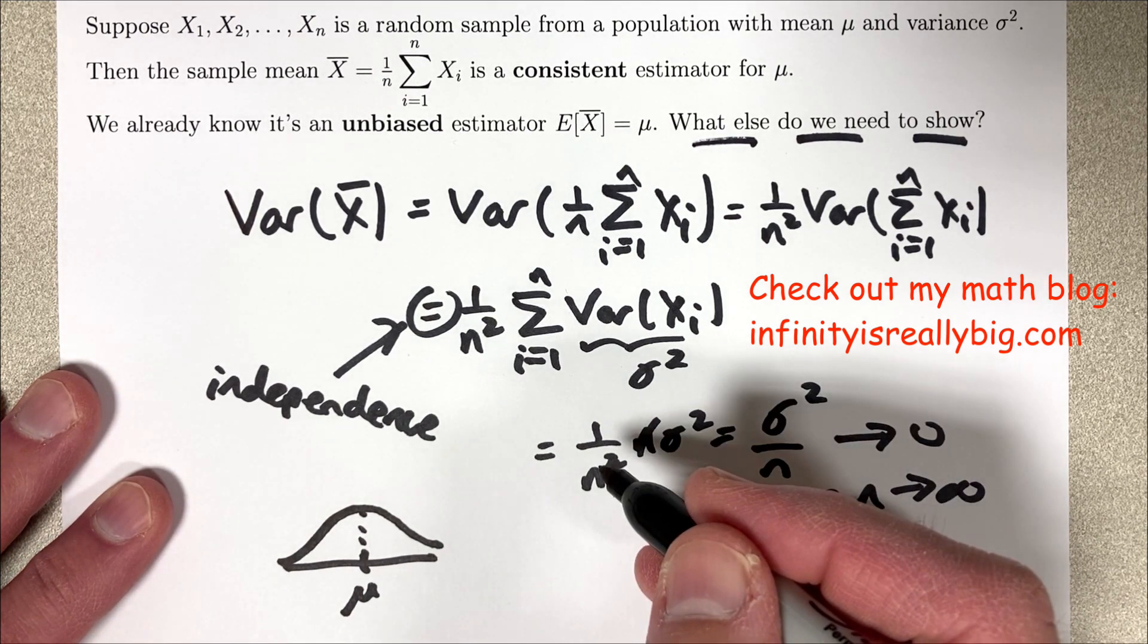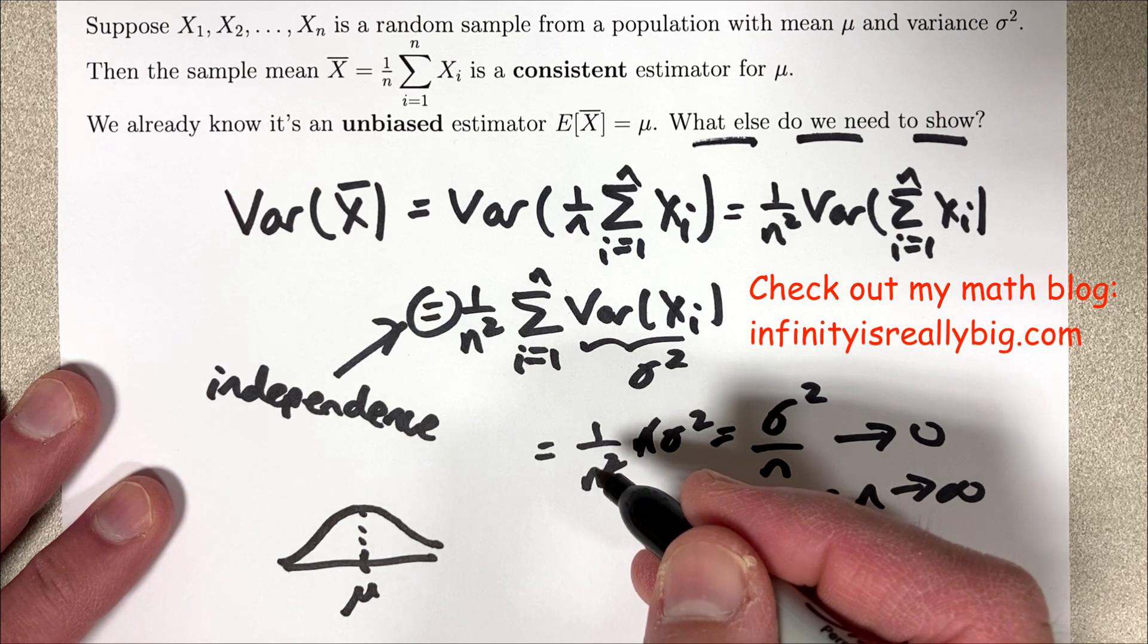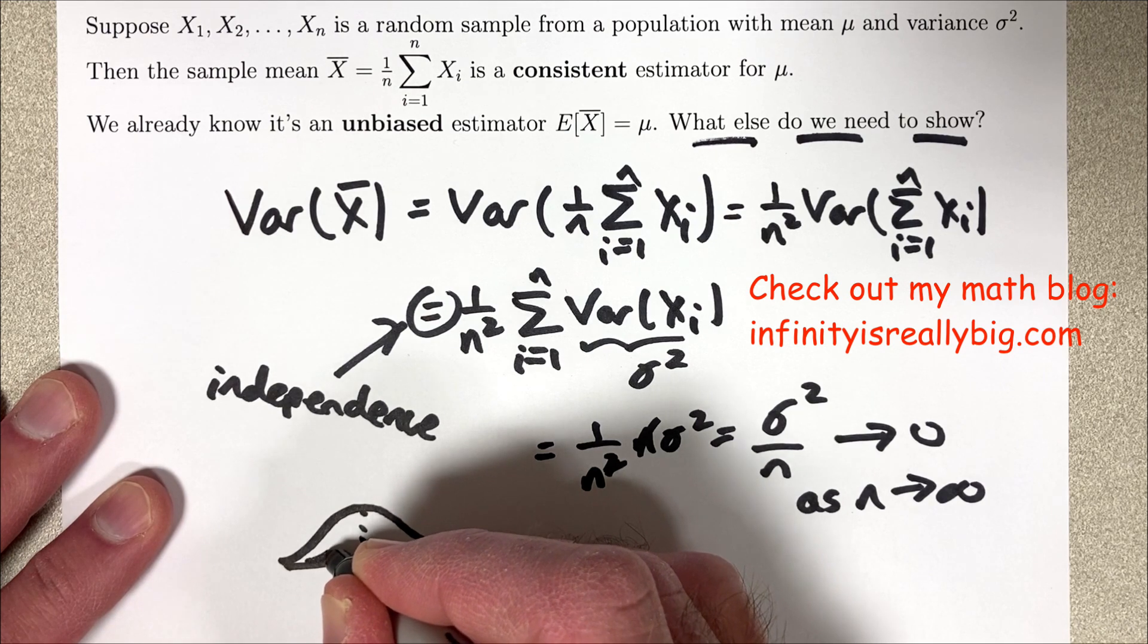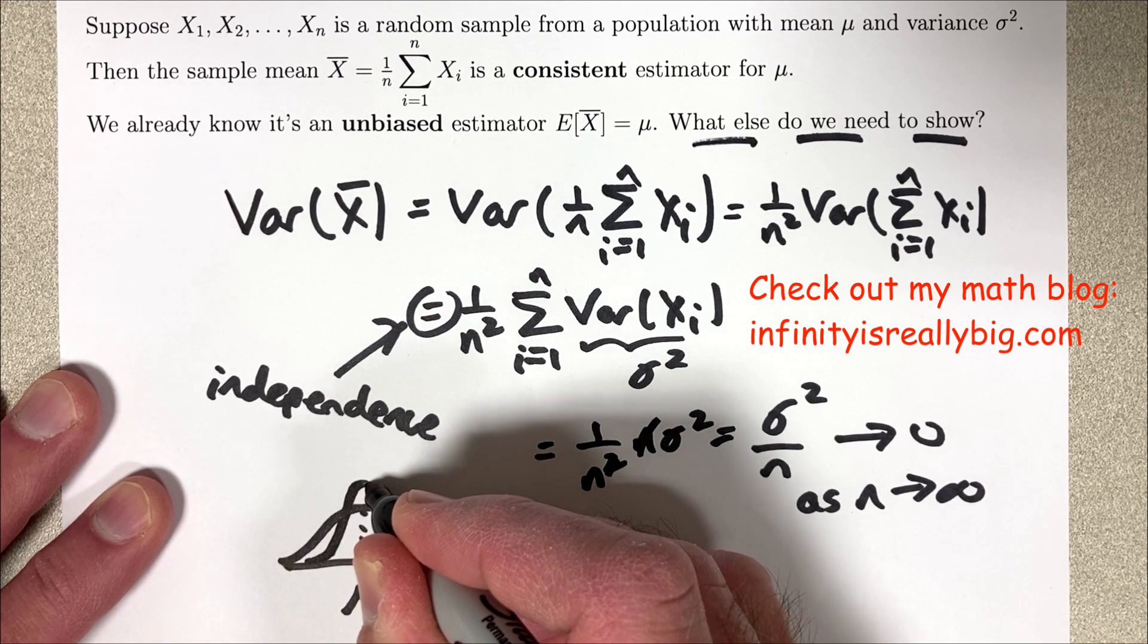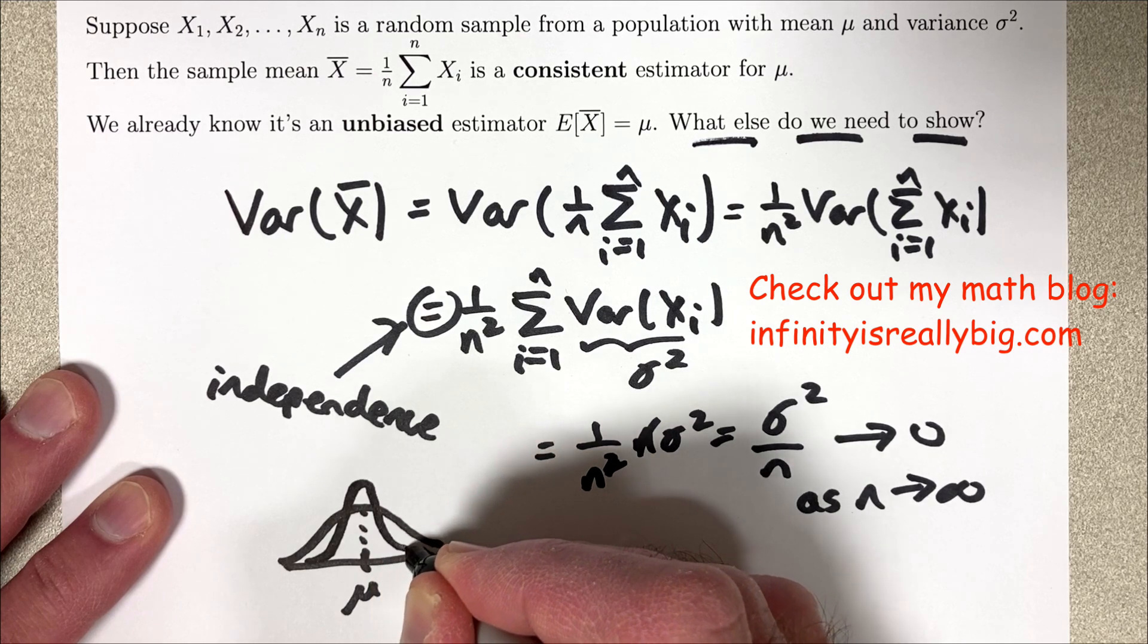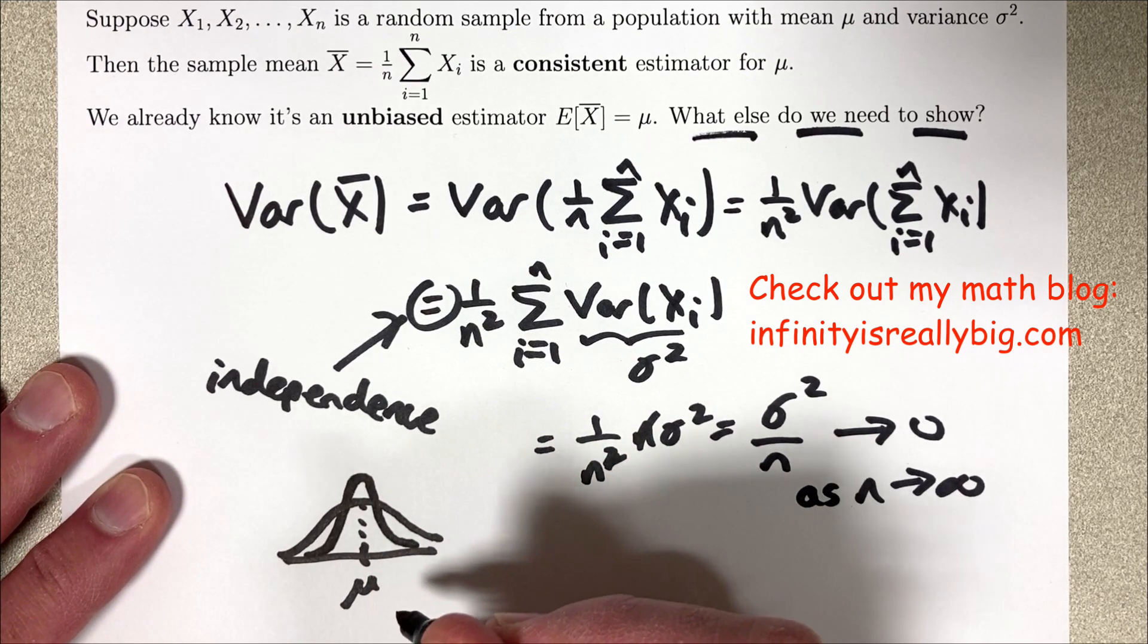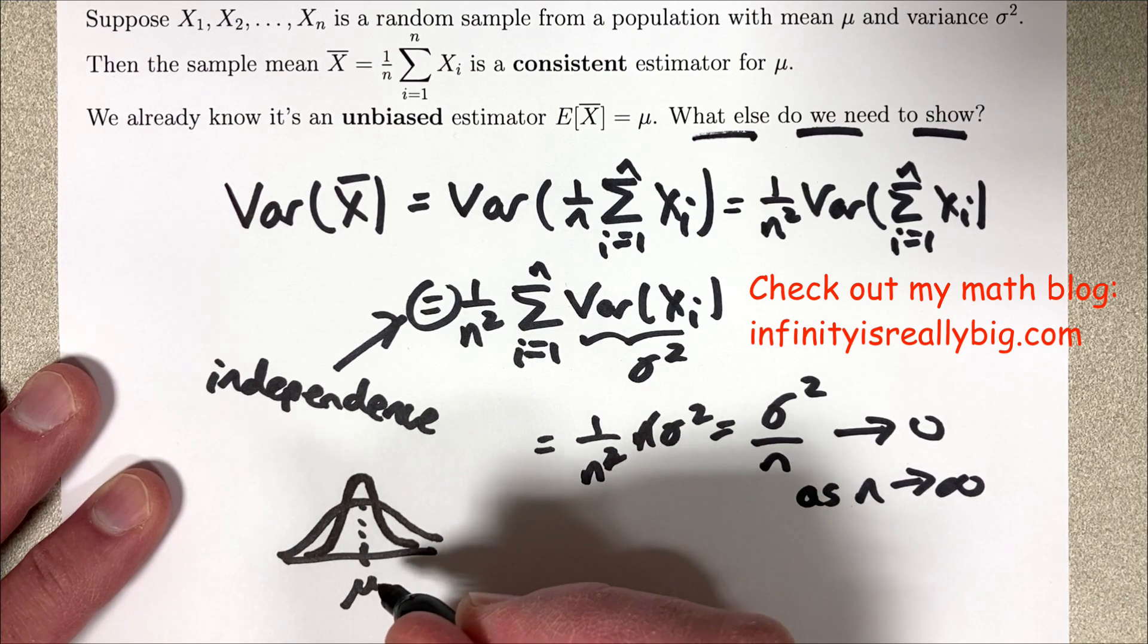And then the fact that x bar is consistent means that the variance and the standard deviation gets smaller and smaller as n gets larger and larger. So for a larger value of n, the sampling distribution of x bar will be taller and skinnier, still centered on mu, but we can expect the observed value of x bar to be closer to mu.